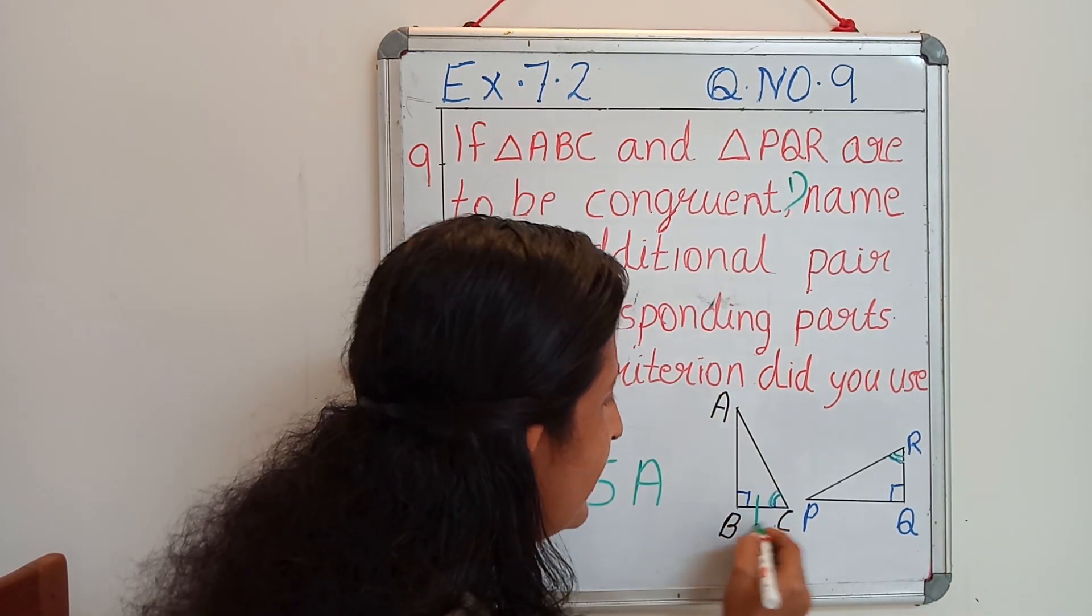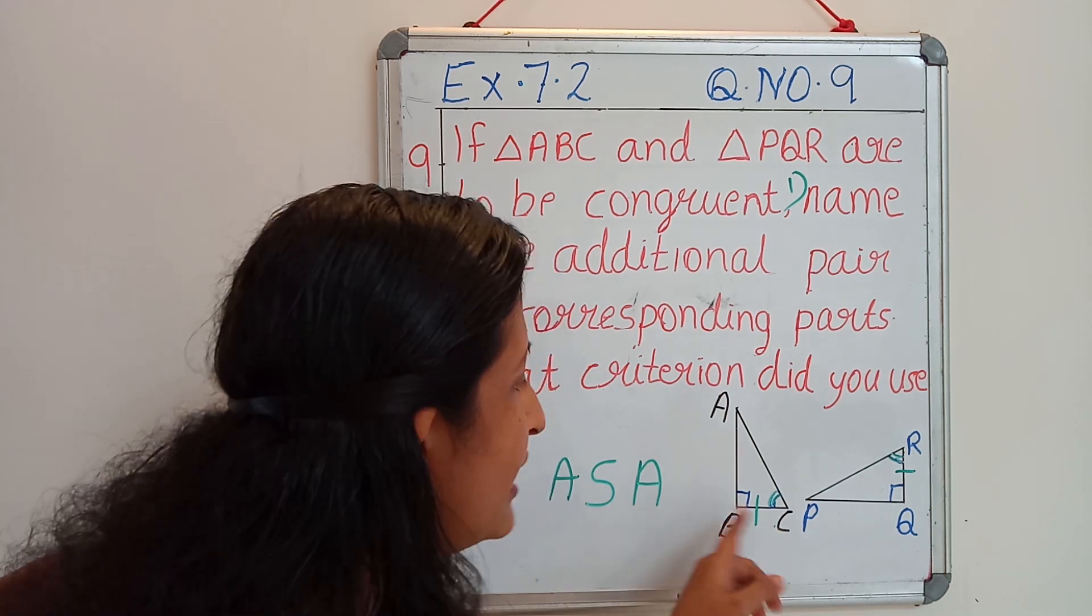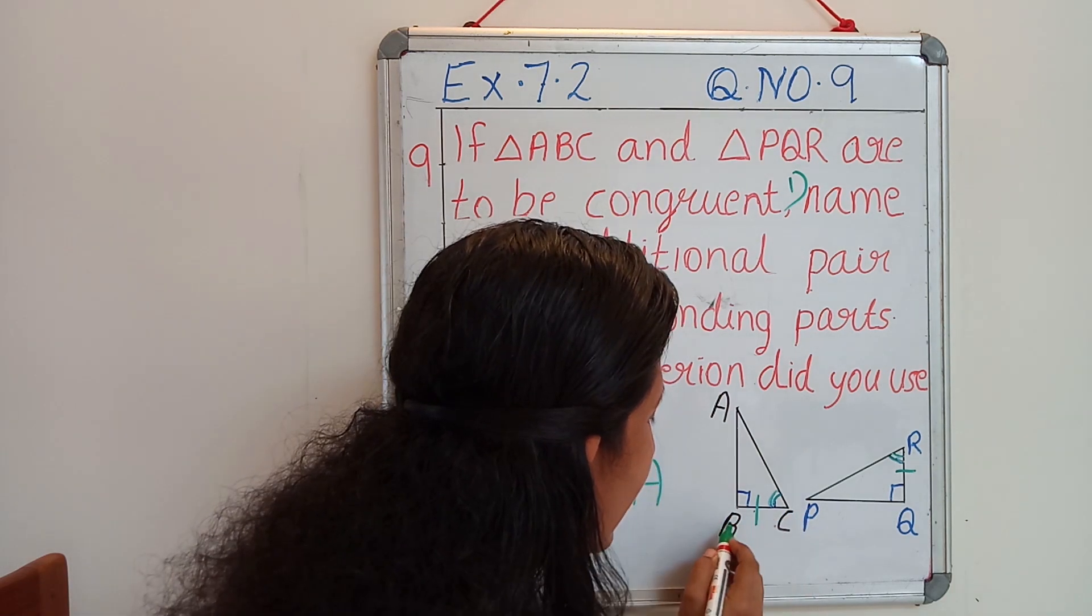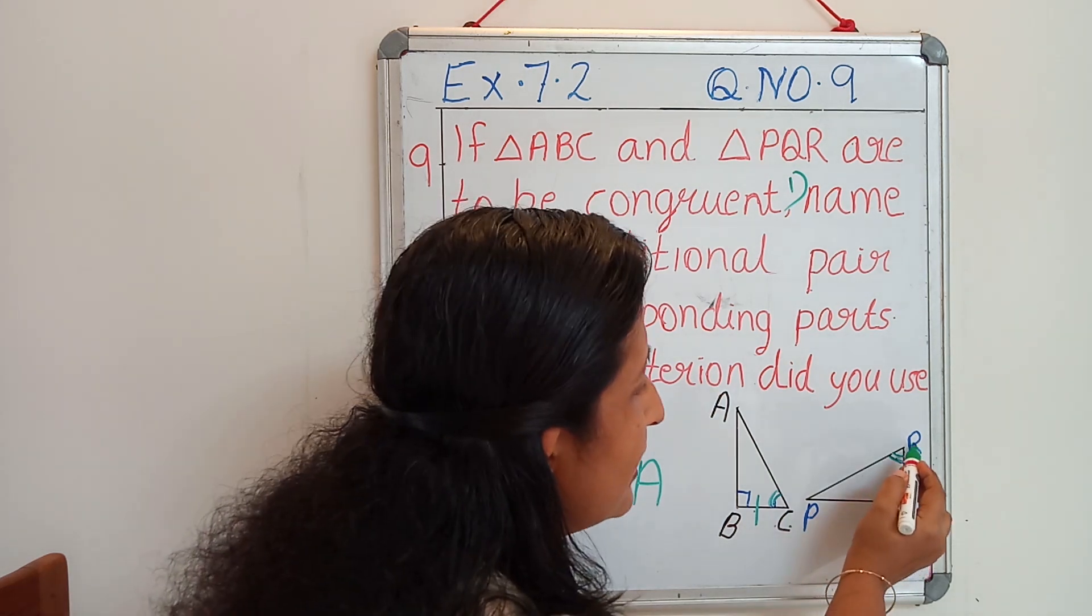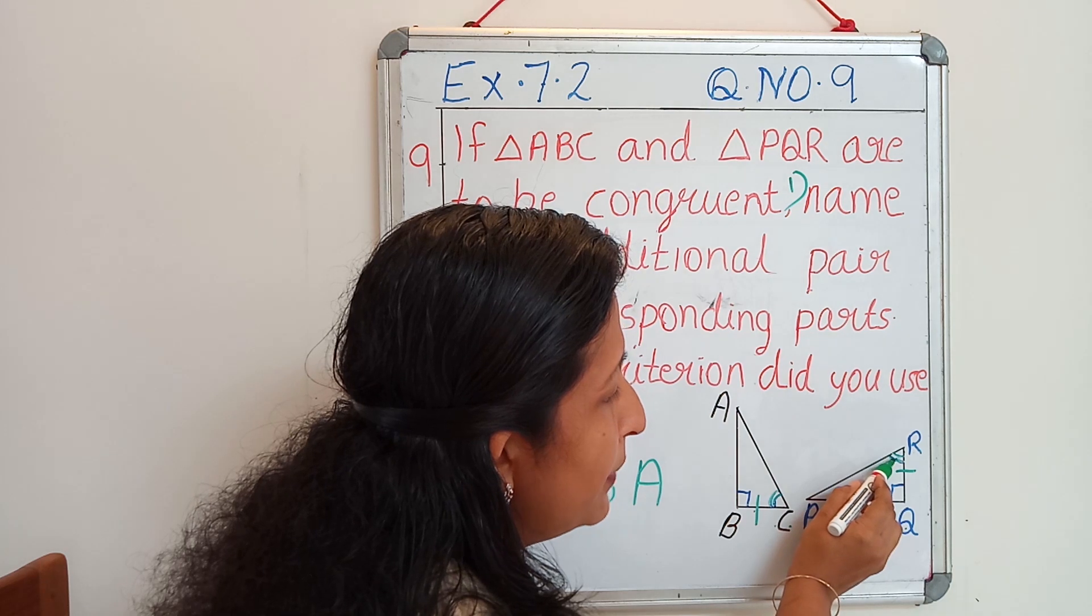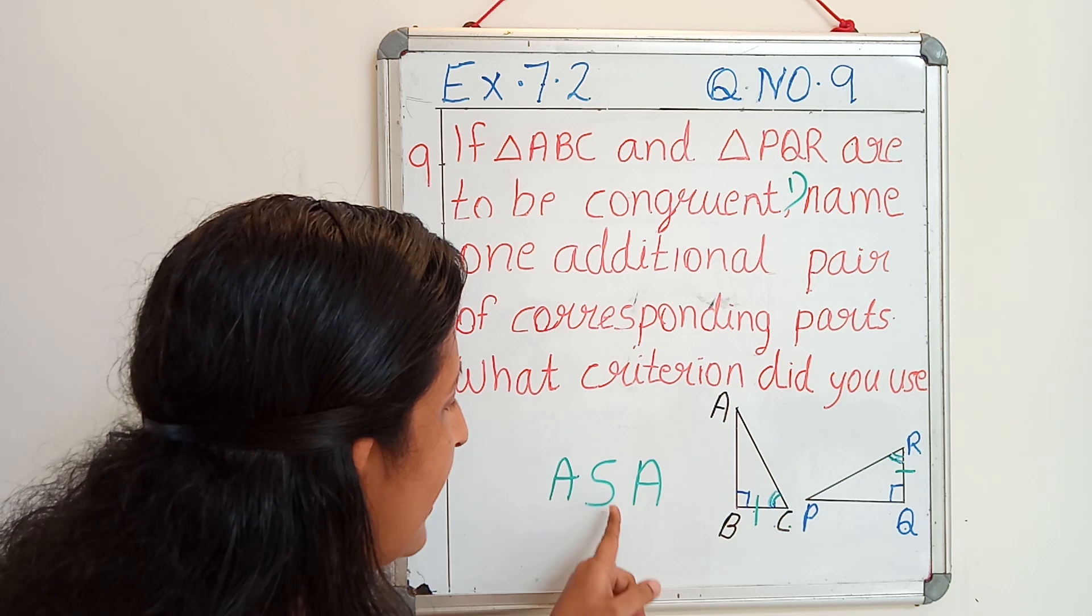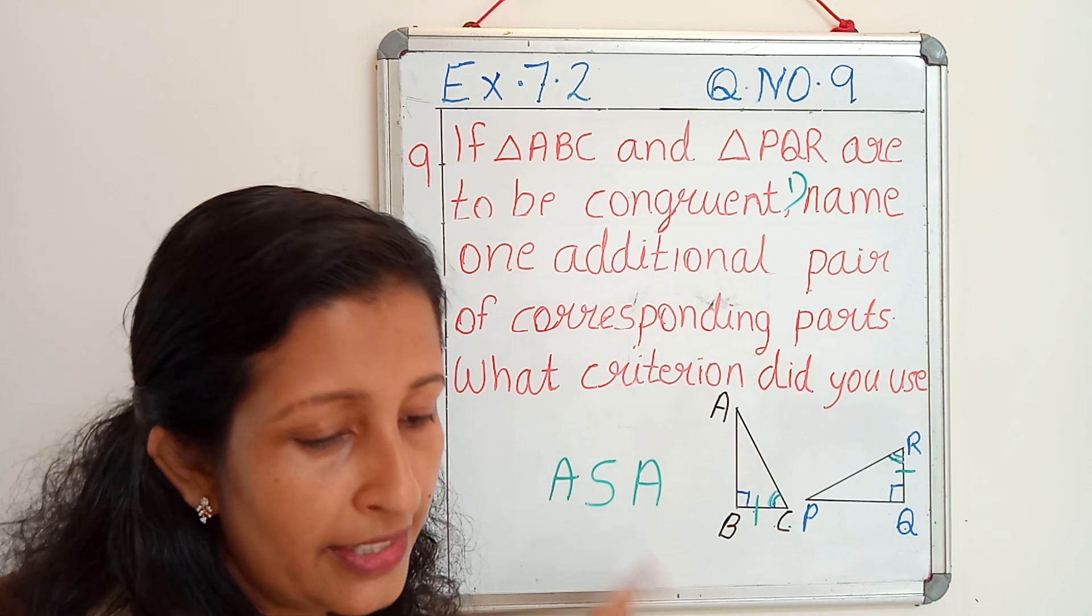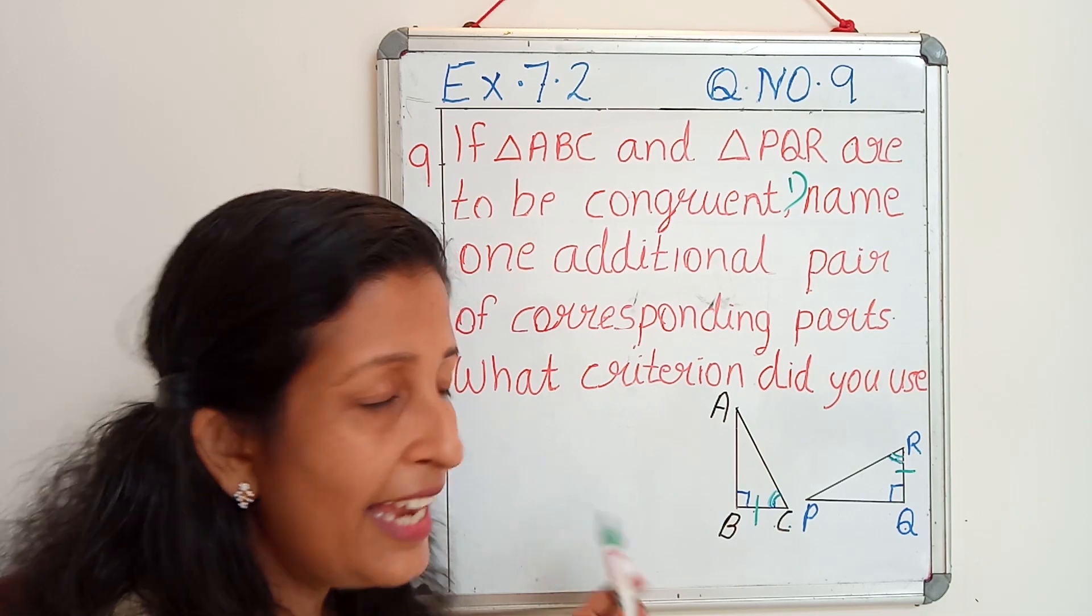This side and this side should be equal. Why did I select these two sides? Because this side is the included side of angle B and angle C, and RQ is the side that included in between angle R and angle Q. Our criteria says that this side should be included with these two angles. The criterion is ASA criteria.